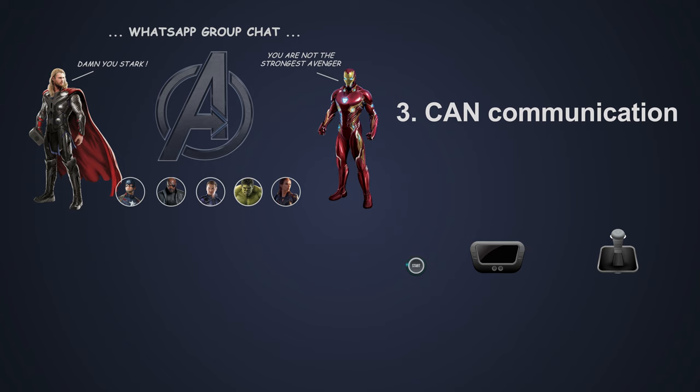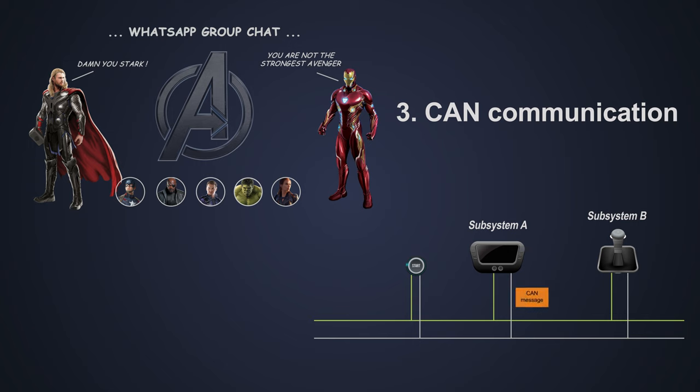If we compare this analogy with CAN communication, the CAN bus is the WhatsApp group. Thor and Iron Man are the subsystems connected to the CAN bus. The phone number of Iron Man is the message ID. When subsystem A sends a message with the unique CAN ID on the CAN bus addressing subsystem B, the CAN message is received and read by all of the other devices connected to the bus. But subsystem B only responds to that message and takes the necessary action accordingly.